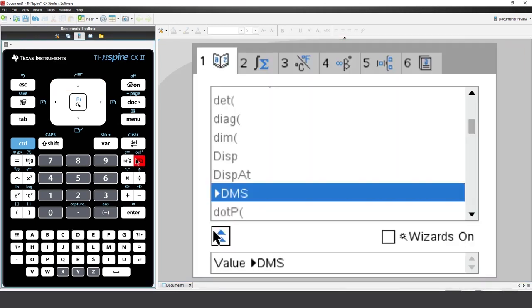So if you need to convert another angle, you can just press the catalogue key and then enter.